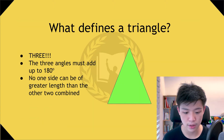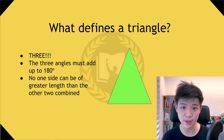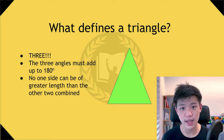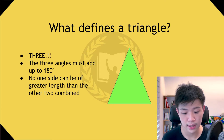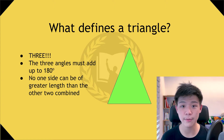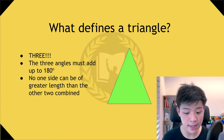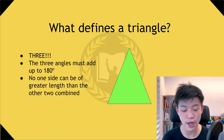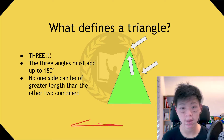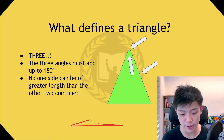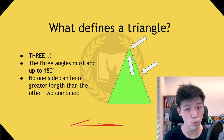So, what defines a triangle? Everything has to do with the number three. It needs three sides, three vertices, and three angles. The three angles must add up to 180 degrees. The last thing is that no one side can be of greater length than the other two combined, because the triangle won't be able to close up and actually form a triangle if one side is way too large.